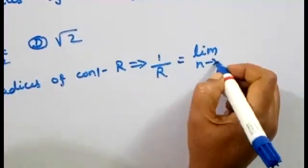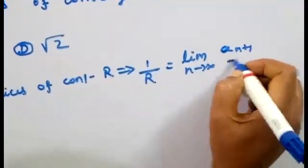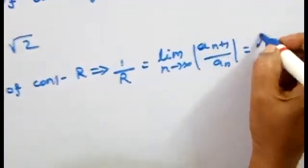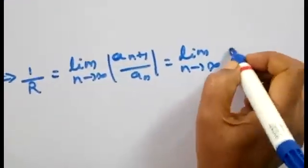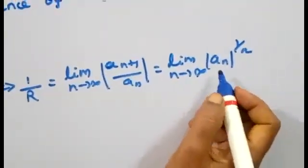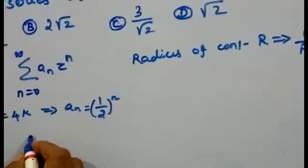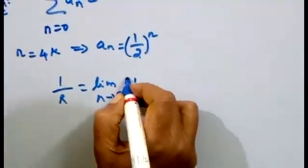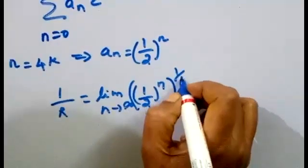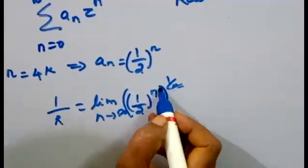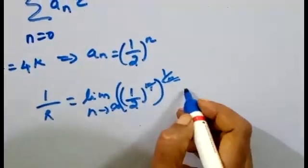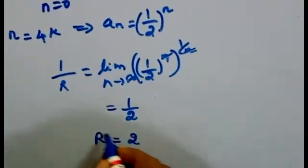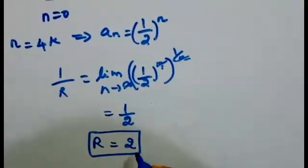When a_n equals (1/2)^n, we calculate 1/R equals the limit as n tends to infinity of a_n^(1/n) equals the limit as n tends to infinity of [(1/2)^n]^(1/n). Since the limit is constant, the value equals 1/2. Therefore 1/R equals 1/2, so the radius of convergence R equals 2.